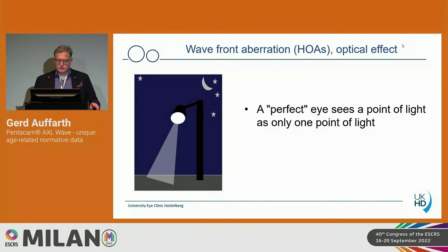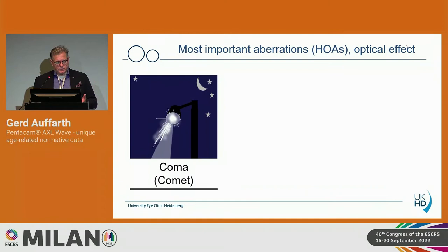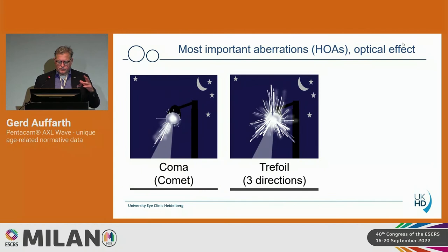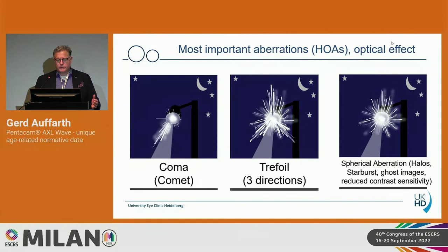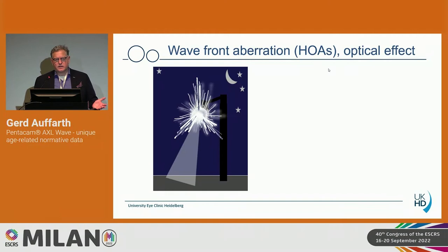In the high order aberrations, a perfect eye would see a point source of light just as a point — but aberrations distort the light spot, which is more visible at night. We see a typical coma shape, trefoil with three directions, and spherical aberration which consists of halo, starbursts, ghost images, and reduced contrast sensitivity. For the patient, they have no idea what that is — they just say they don't see well. They can have good Snellen acuity but still complain about visual quality.